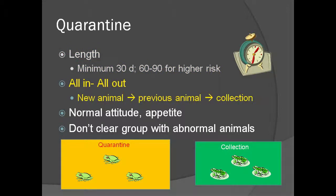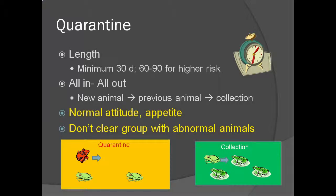Animals should come into and leave quarantine as a group — this is referred to as all-in, all-out. If new animals are added to a room during quarantine, the quarantine period should start over again, as a new animal could pass a pathogen to others who could then carry it to the rest of the collection. Animals should be eating and acting normally when released from quarantine. If any animals in the group do not appear normal, the group should not be released until the problem is diagnosed and corrected.